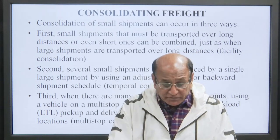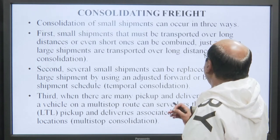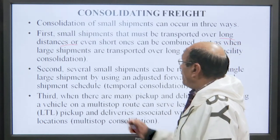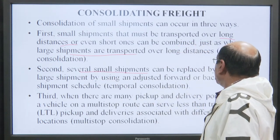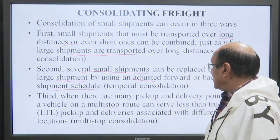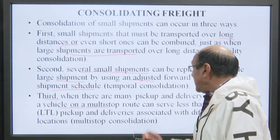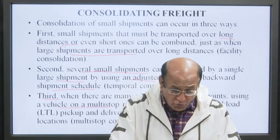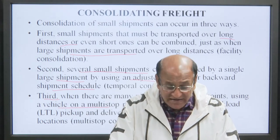The consolidation of small shipments can occur in three ways. First, a small shipment that must be transported over a long or short distance can be combined just as when large shipments are transported over a long distance. Second, several small shipments can be replaced by a single large shipment by using an adjusted forward or backward shipment schedule — this is temporal consolidation. Third, when there are many pickups and deliveries associated with different locations, that is multi-stop consolidation.